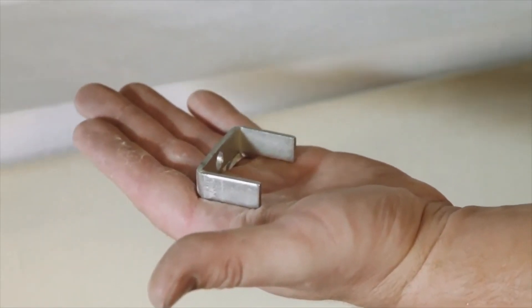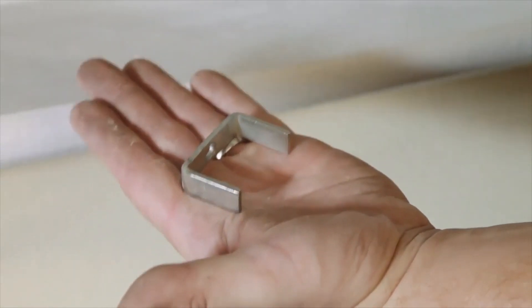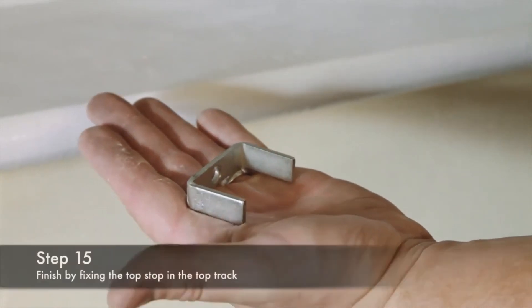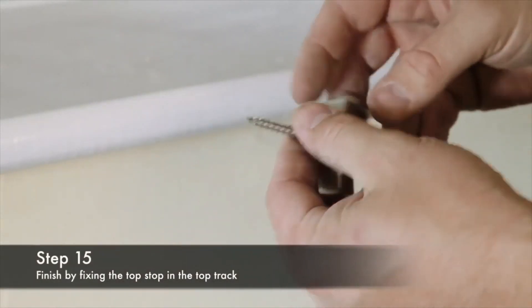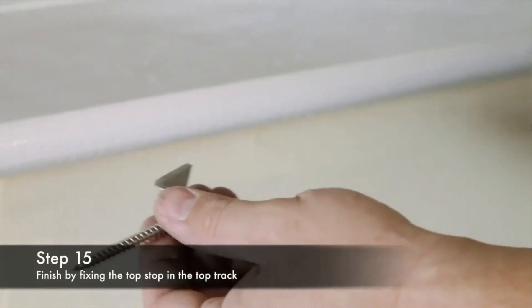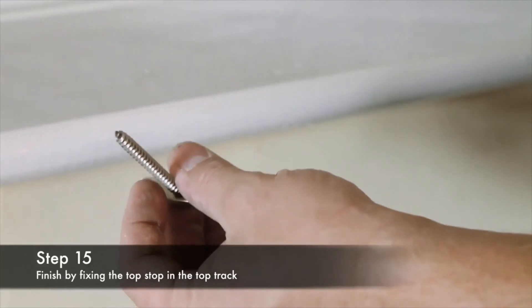The last thing to do when you're installing a double set of grilles is to fit this top stop, screw through there and fix straight up through the top track.